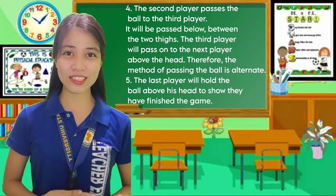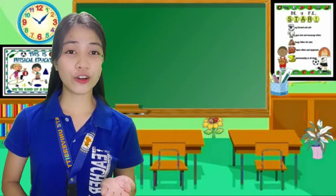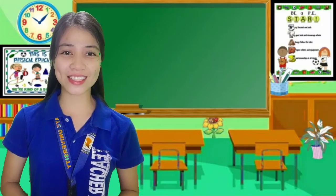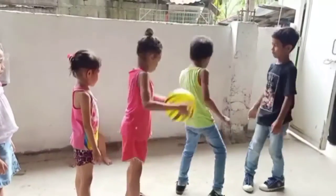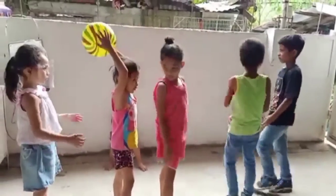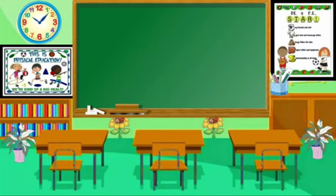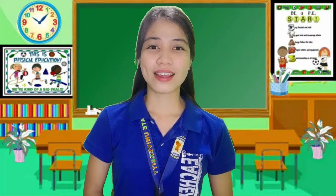Fifth, the last player will hold the ball above his head to show they have finished the game. Is it clear, class? Very good. In order for you to understand the game better, let's watch this video. I hope you understand the game Passing Ball Above and Below. Thank you for listening.